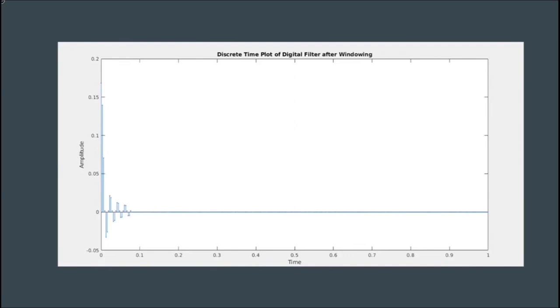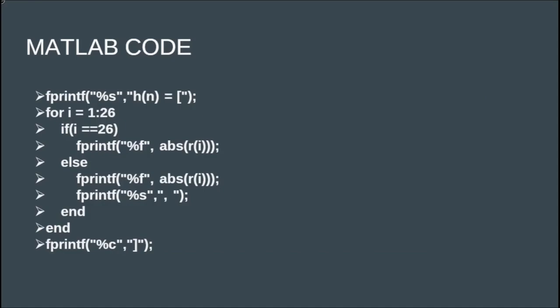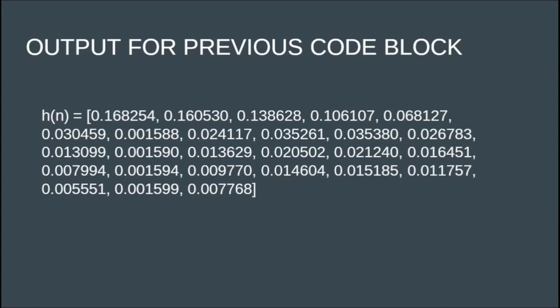Now that we have successfully designed the filter, we need to find the amplitude values of the first 25 samples. We use a for loop and write abs(R(i)) inside it. We take the absolute value because we considered the initial impulse response as the single-sided band, not the double-sided band. Since we considered the single-sided band, we get complex values in the output, so we use the absolute function. Executing this block of code gives us the amplitude values of the first 25 samples of H(n).